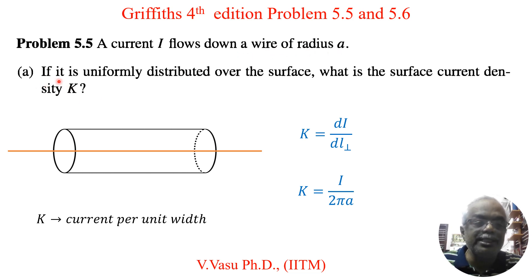Part A is, if it is uniformly distributed over the surface, what is the surface current density K? Here it is a cylindrical shape I have drawn. This is not a cylinder, it is a wire which is having cylindrical shape.